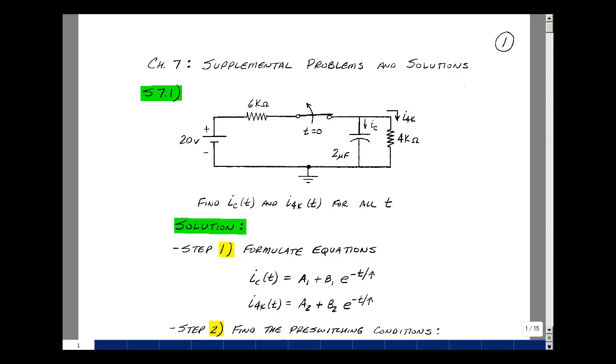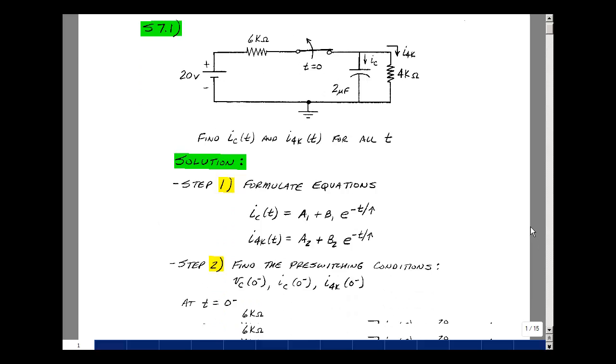In the Chapter 7 class notes, we had a six-step algorithm for solving for any voltage or any current of a one capacitor circuit. So let's use that technique. Step 1 is to formulate the equations. Since this is a first-order differential equation, the solution is in the form A plus B times e to the minus t over tau. Since we have two equations here, let's use a 1 and 2 subscript. The value of tau, though, will be the same for both i sub c and i of the 4k.